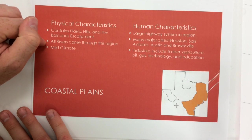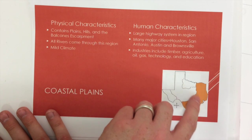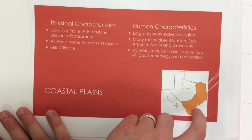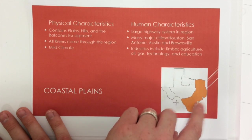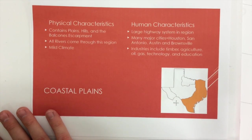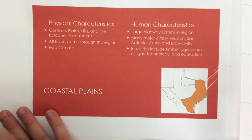All rivers come through this region and are going to flow south to the ocean. That's why they're going to come into this area, so every river finishes up here. Finally, it has a very mild climate — not extremely hot, not extremely cold, kind of in the middle.